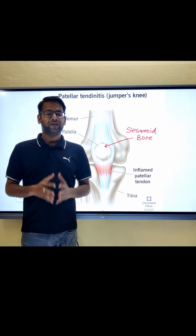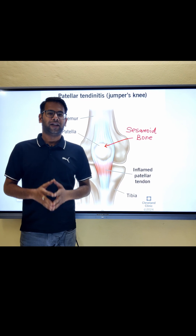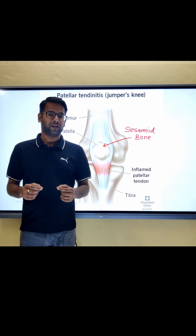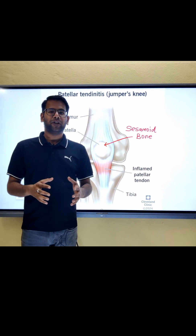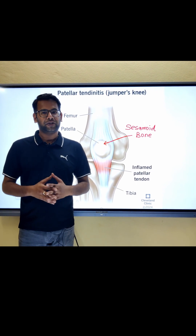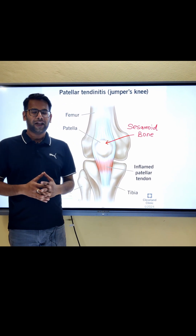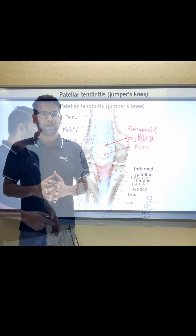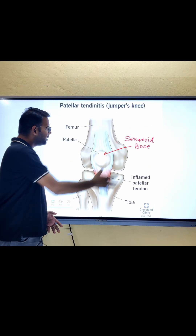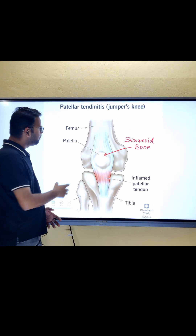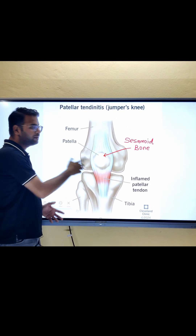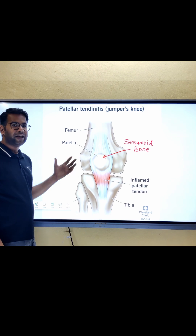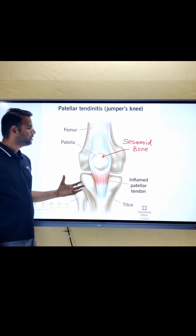Option four: sesamoid bone. Yes, this is the correct answer. A sesamoid bone is a special type of bone that is embedded within a tendon. As you can see in this picture, the patella is a sesamoid bone found within the tendon of the quadriceps muscle.